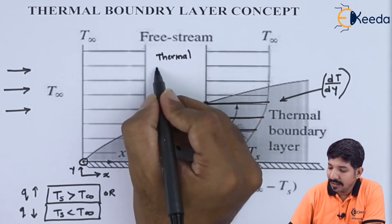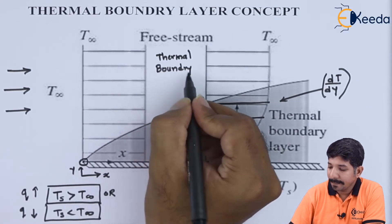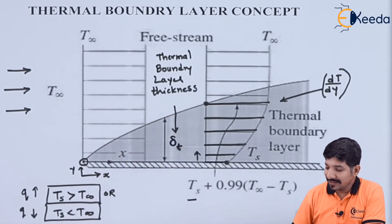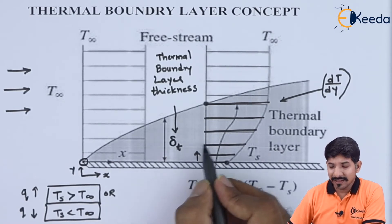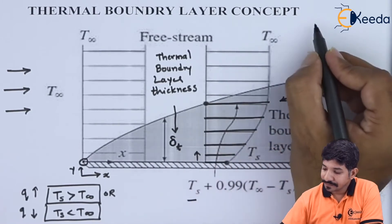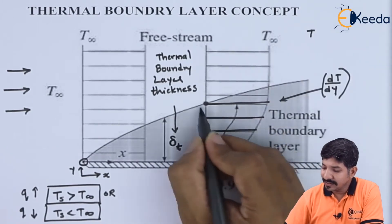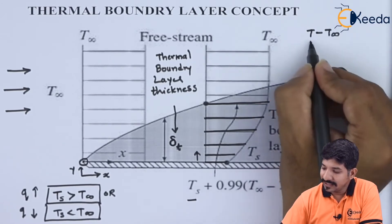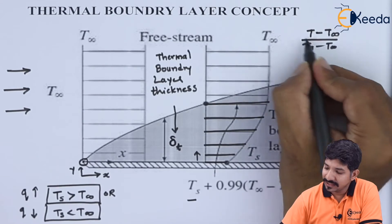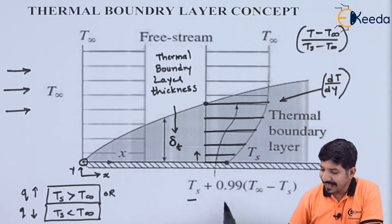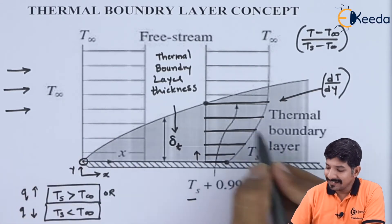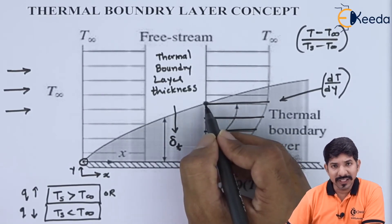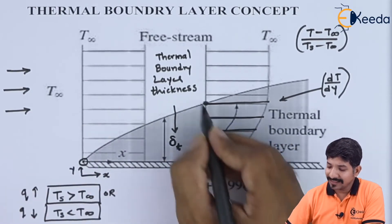They call this delta T the thermal boundary layer thickness. Delta T can be defined as the thickness where the temperature difference — the temperature T of the fluid in this region — satisfies (T minus T infinity) upon (Ts minus T infinity) is almost 0.99 of T infinity itself. In other words, the temperature reaches almost equal to the temperature of the free stream. At that point, the length is called the thermal boundary layer.